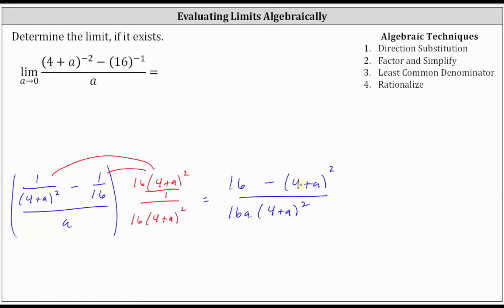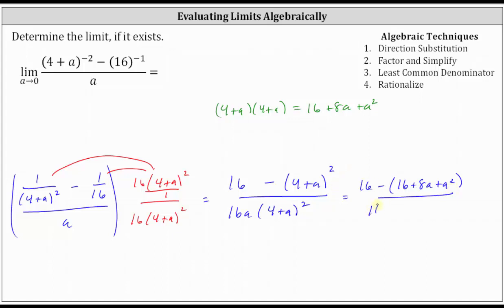Now let's simplify the numerator by squaring four plus a. Four plus a times four plus a equals 16 plus four a plus four a, which is plus eight a, and then plus a squared. So in the numerator we have 16 minus the quantity 16 plus eight a plus a squared, all over the same denominator. Distributing negative one, we have 16 minus 16 — which is zero — then minus eight a minus a squared. So the numerator simplifies to negative eight a minus a squared.